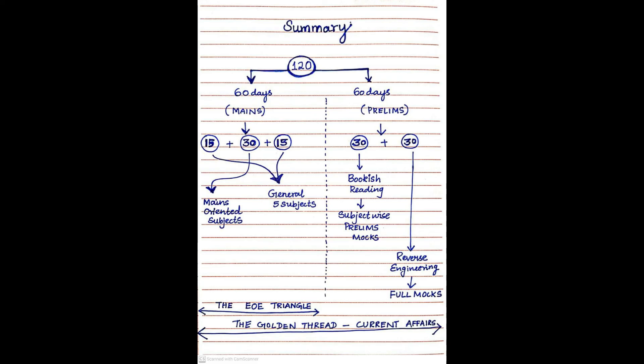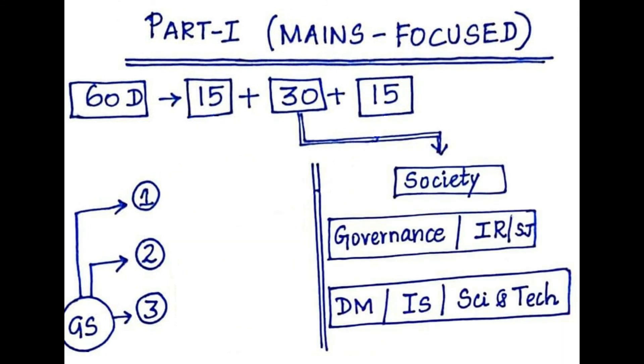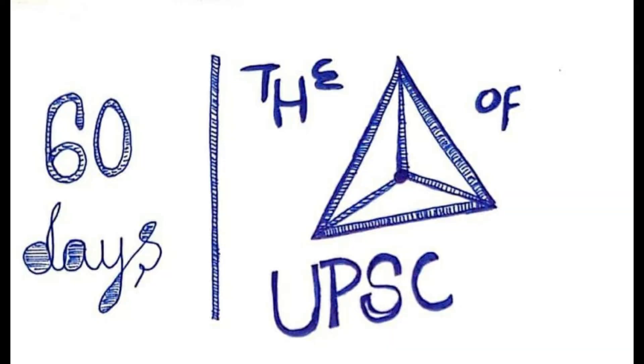Let me summarize the entire video in brief. Since there are 120 days left for your prelims preparation, I would like to divide it into 60 days plus 60 days. The first 60 days will be mains focused and the rest will be on prelims. In the first 60 days, I would divide it into 15 plus 30 plus 15 where I will utilize the first and last 15 days to give two readings of five basic subjects which is History, Geography, Polity, Economy and Environment. The mid 30 days will be utilized for preparing mains focused topics such as Society, Governance, International Relations, Social Justice, Disaster Management, Internal Security, Science and Tech. Also, throughout the entire 60 days, I will try to maximize my hand in the precious triangle of UPSC involving Ethics, Essay and Optional Subject.